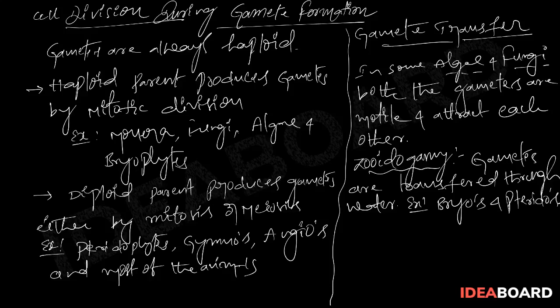A large number of male gametes fail to reach the female gametes. To compensate for this loss during transport, a large number of male gametes are produced. In seed plants, pollen grains carry male gametes to fertilize the eggs.